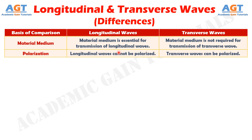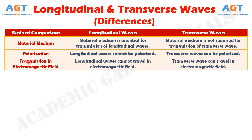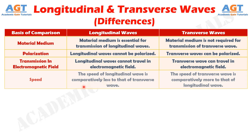If we differentiate them in terms of polarization: longitudinal waves cannot be polarized, but transverse waves can be polarized. If we differentiate them in terms of transmission in an electromagnetic field: longitudinal waves cannot travel in an electromagnetic field, whereas transverse waves can travel in an electromagnetic field.